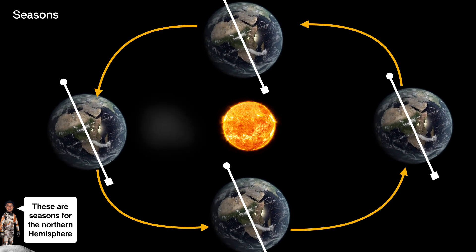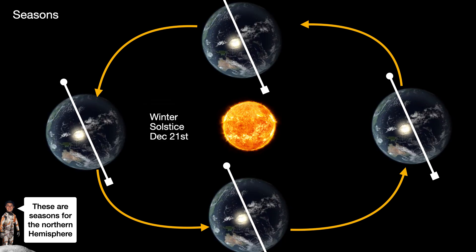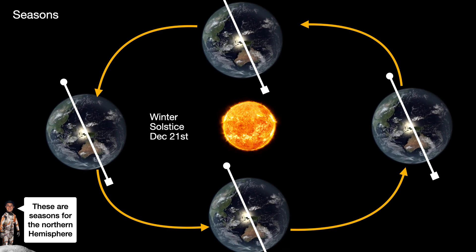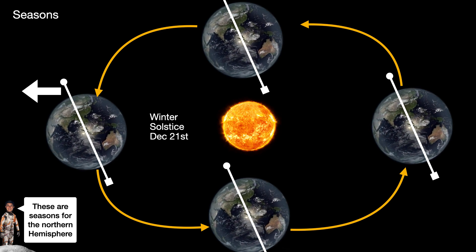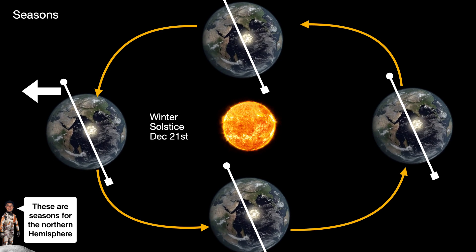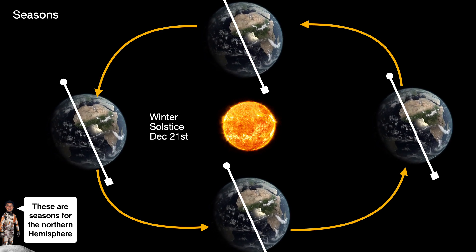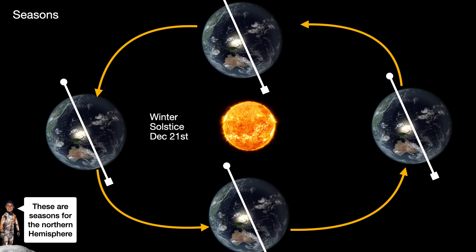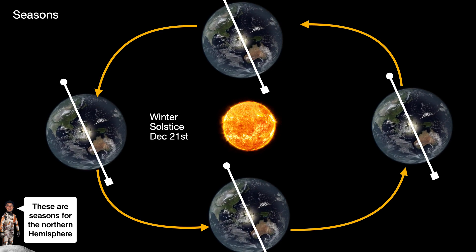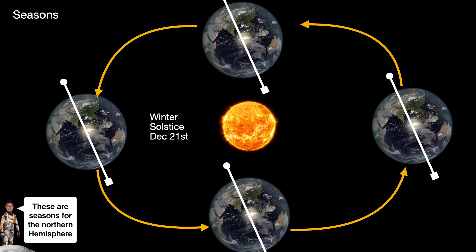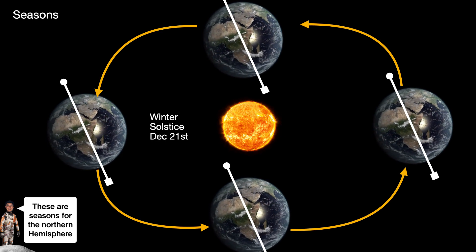So the first season that we want to highlight will be called the winter solstice. The winter solstice occurs when the North Pole is pointed away from the sun the most it will be over the course of the entire year. This happens on December 21st, give or take a couple of days. And what it means is that we have the shortest daylight and longest night time over the course of the whole year.